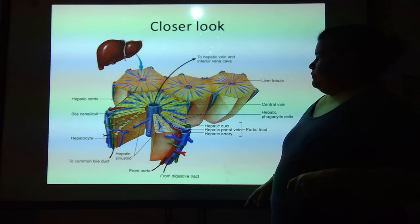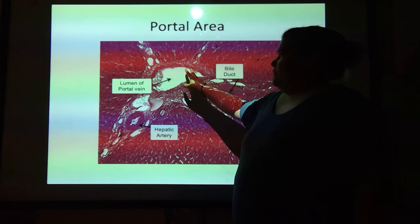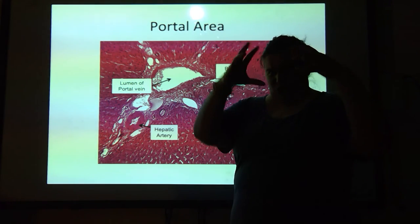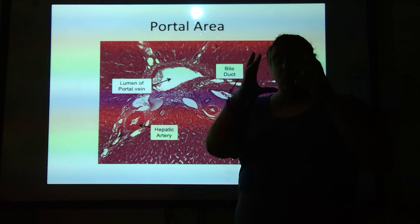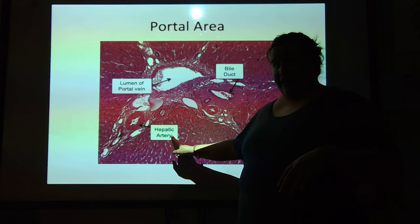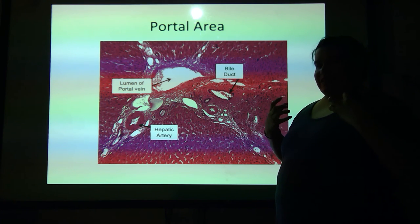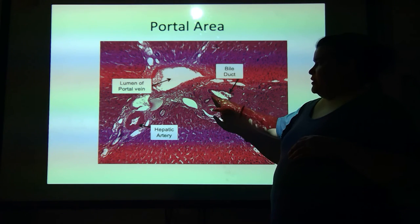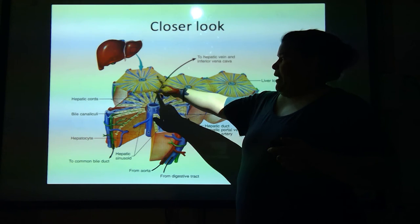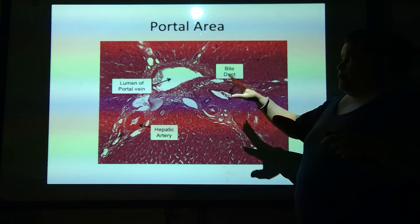So, portal area — up close and personal. Here's the lumen of the portal vein. Veins always look like a deflated balloon — they don't have a really structured wall to them. So that's the lumen of the portal vein. See how thick this is though? This is going to be the hepatic artery. The bile duct is always going to look rough and tumble — it doesn't look like a vein, it doesn't look like an artery. See all that purple? Those are bile ducts. You're going to have units of these in every corner, so don't freak out if you see multiples.